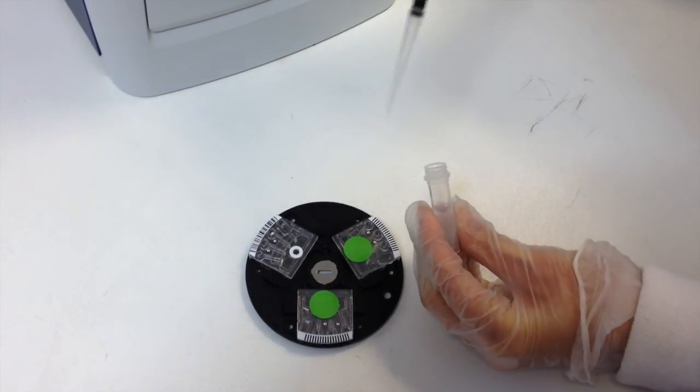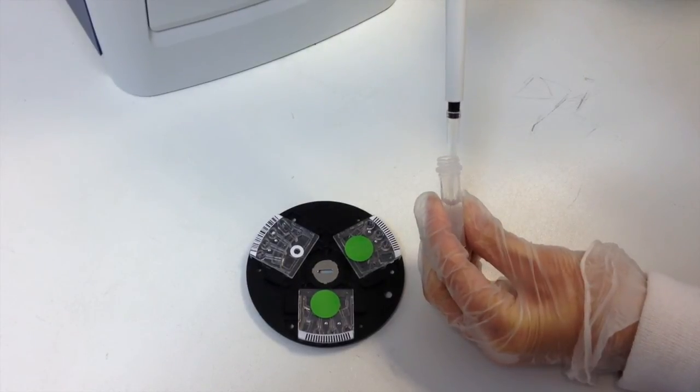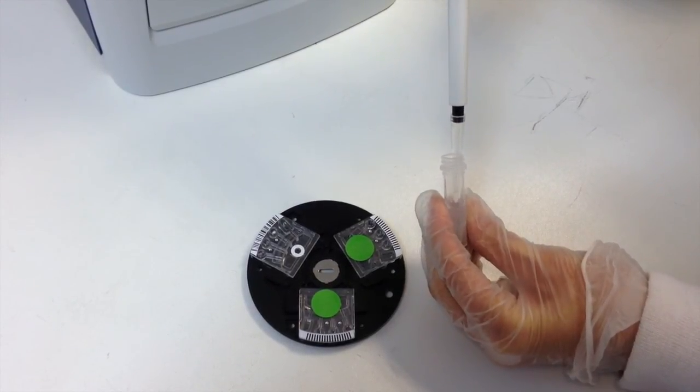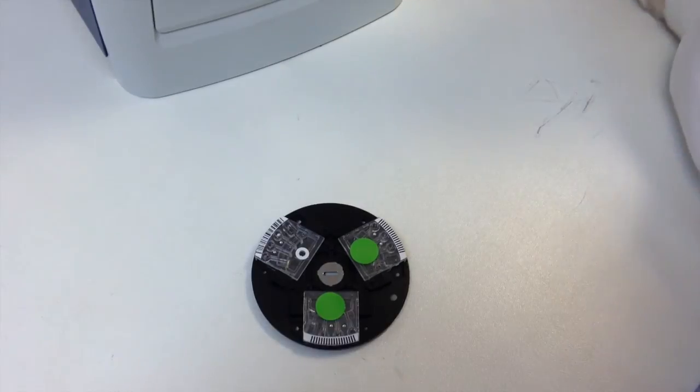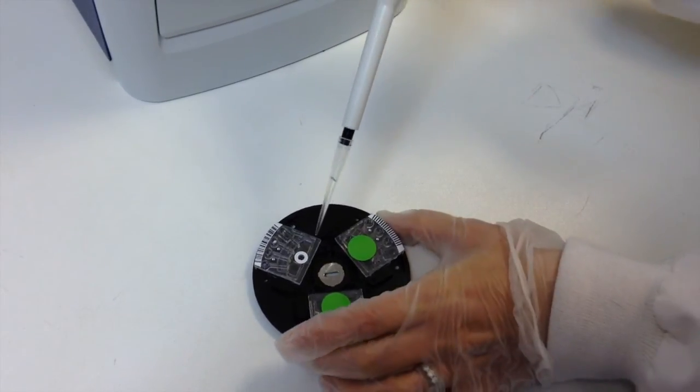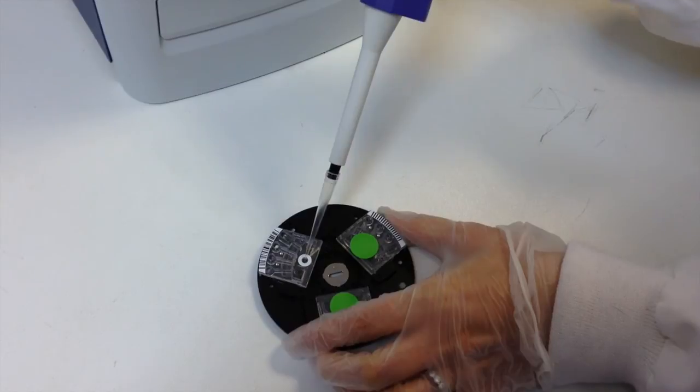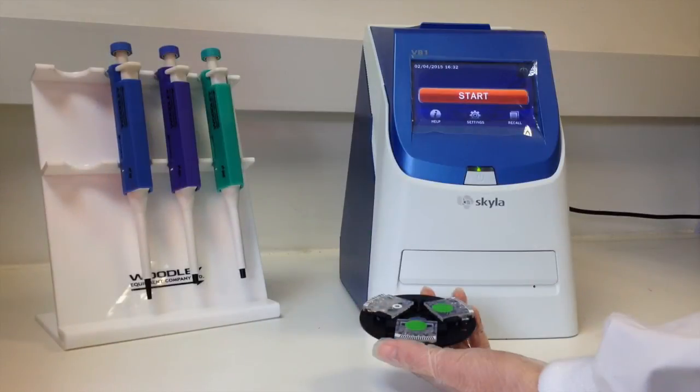Using the 100 microliter pipette and a new pipette tip, transfer 100 microliters of the diluted sample into the cartridge via the sample injection port. Please ensure all sample fill cartridges contain samples from the same patient.